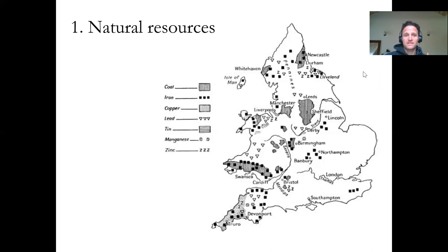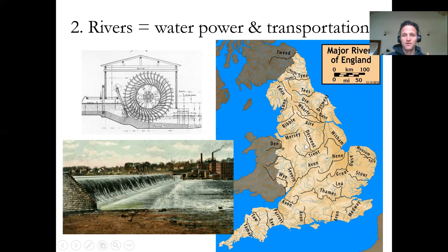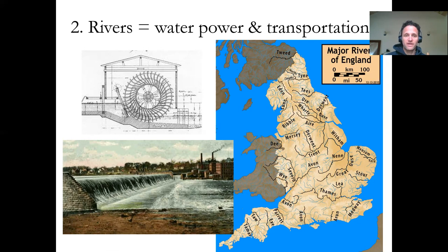The other thing that England has is navigable rivers. Before they started having coal-powered factories, they actually had water-powered factories — so they switched to the factory system using water first. You can see from this map they have rivers everywhere, and these rivers are navigable so you can send a ship or raft up these rivers into different cities. You could have water-powered factories on these rivers, and it would be very easy to transport goods produced along those rivers to other parts of Great Britain. This helped their industrial manufacturing base get started.